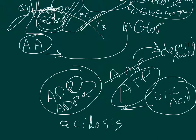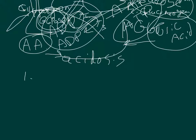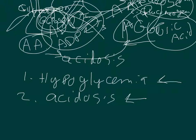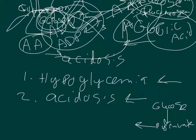So at this point we have two symptoms: hypoglycemia, which is the low blood sugar, and acidosis from the uric acid going into the blood. There's also another source of acidosis — lactic acid. In the muscles, whenever you're running low on oxygen, glucose goes to pyruvate, and then through anaerobic metabolism to form lactate or lactic acid. That's another source of acidosis.